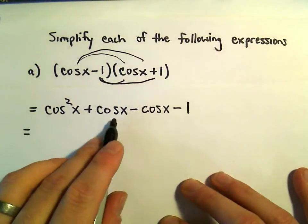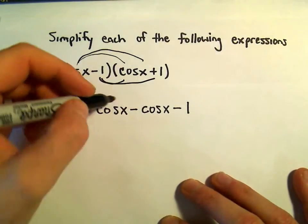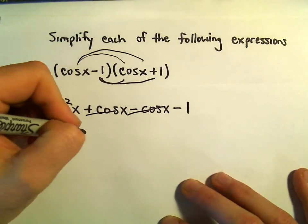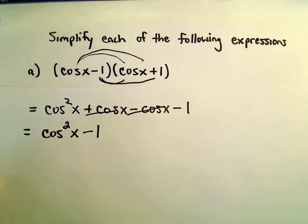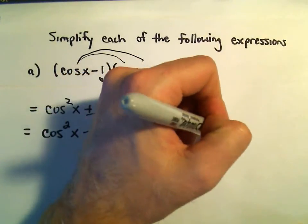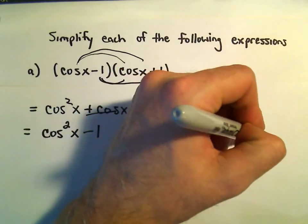We've got a positive cosine and a negative cosine. Those cancel out. So we're left with cosine squared x minus 1. But recall this identity: cosine squared x plus sine squared x equals 1.